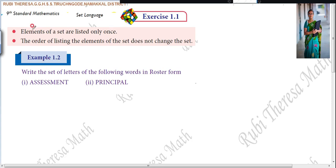Before seeing this example, just see these two points. In the example, I will talk about two points. Elements of a set are listed only once. This is a very important point. Elements of a set are listed only once. Only one time you must write.